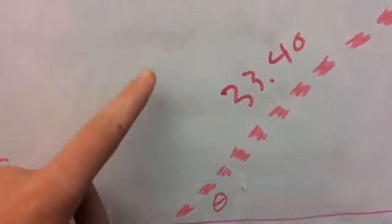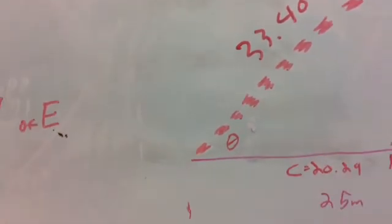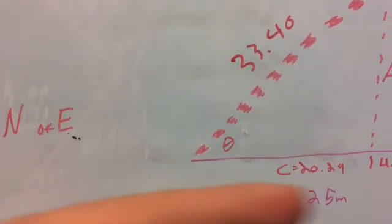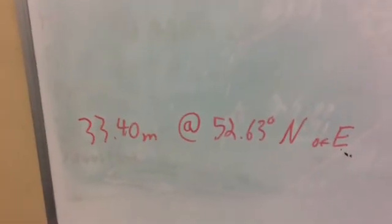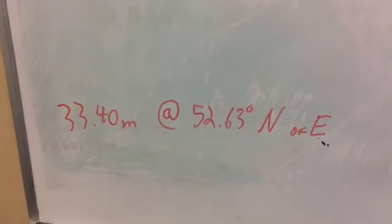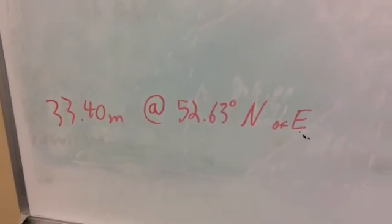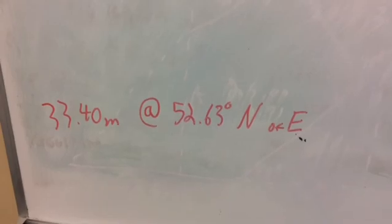Now we also know that we're traveling north of east, since it was said in the beginning that you entered the room at due east. Therefore, our answer for the resultant displacement would be 33.40 meters at 52.63 degrees north of east.